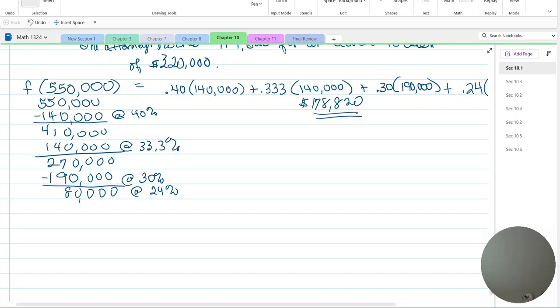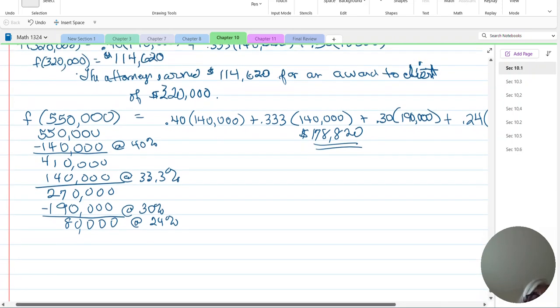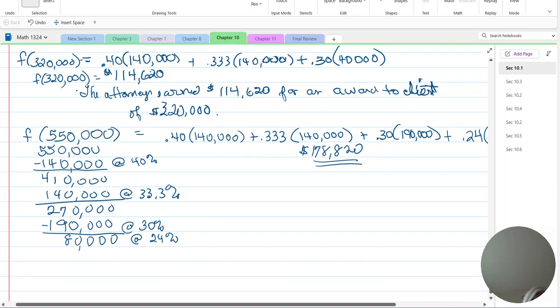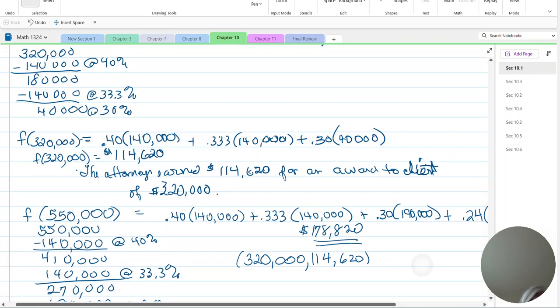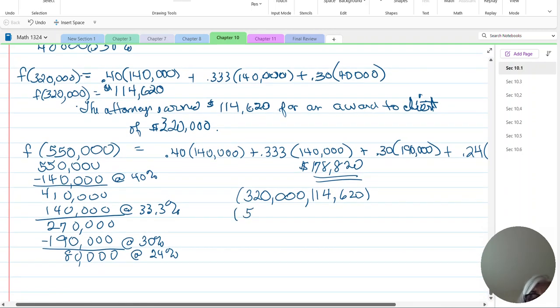Now this one has a graphing component. And it'll be easy because you're going to select the one that has the ordered pairs. So in the ordered pairs, this is all you have to do. Is you're going to say for the award of $320,000, the attorneys earn $114,000 and 620. And that was one of the ordered pairs. Our big one was the 550. And it'll be on the graph, so you can look.